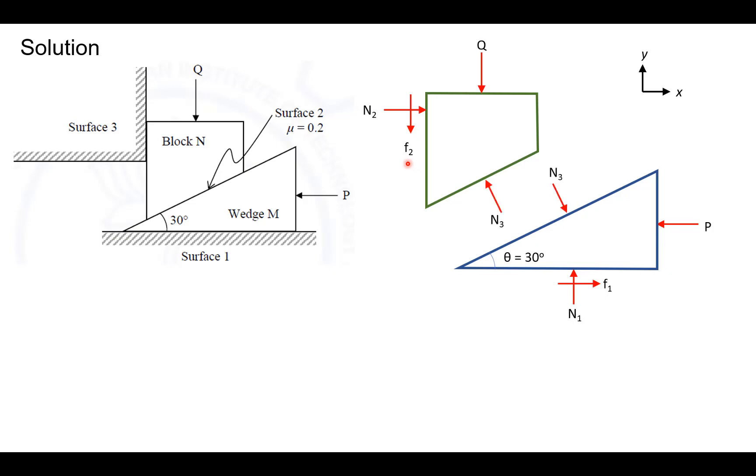Now if we were to consider surface 2, there would be a normal force, let us call this N3, applied from block N to wedge M and vice versa. And let us consider friction to be F3 pointed in the direction shown which is opposing the motion of the wedge. From Newton's third law, we can see that an equal and opposite F3 would be applied onto the block N.